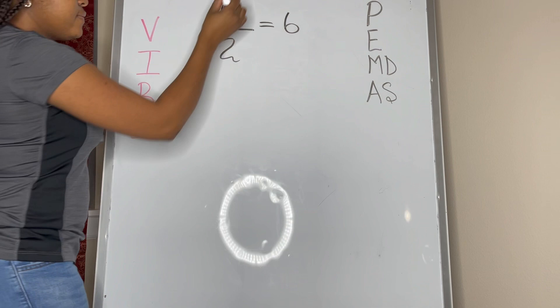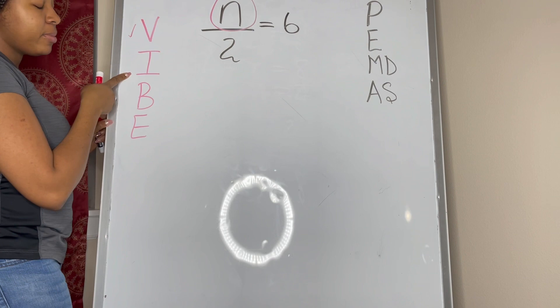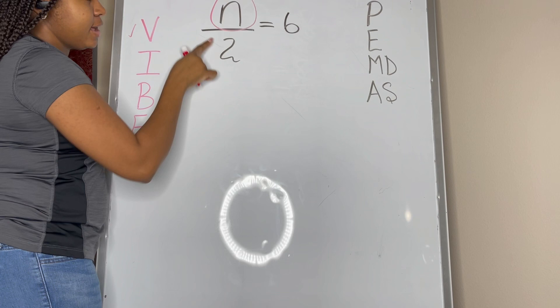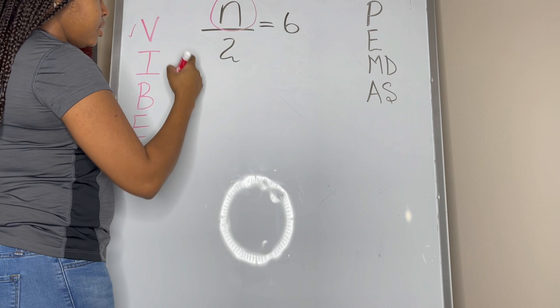V, we need to identify our variable, which is n. Check. I, we need to isolate by performing the inverse operation. So whatever is being done on this side, we can see that n is being divided by 2. The inverse of division would be multiplication, so we need to multiply.